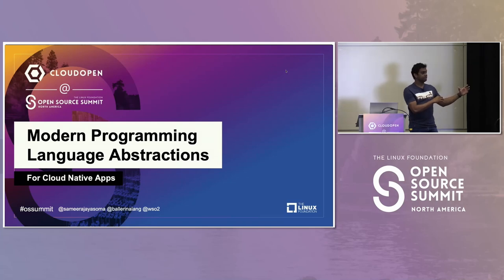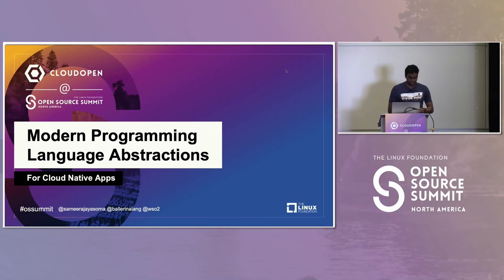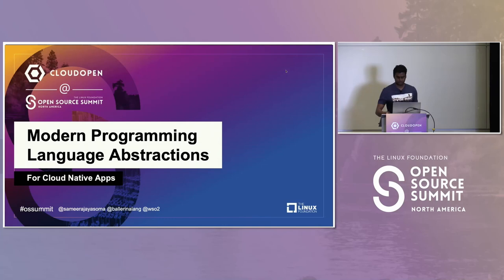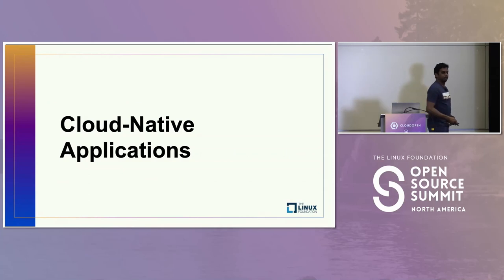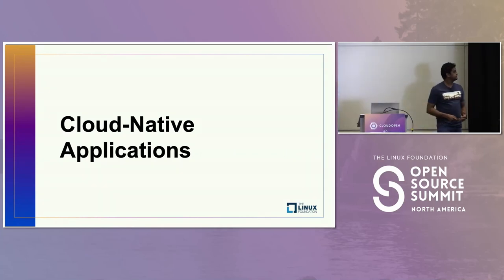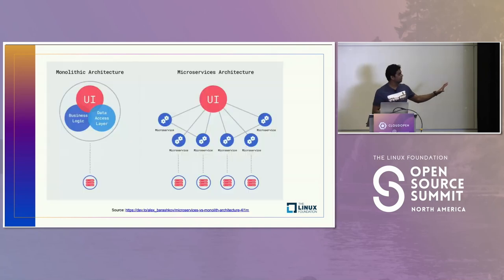Today I'll have examples from Java, C Sharp, Ballerina, and a bunch of languages to explain what these modern programming language abstractions are. Let's get started.